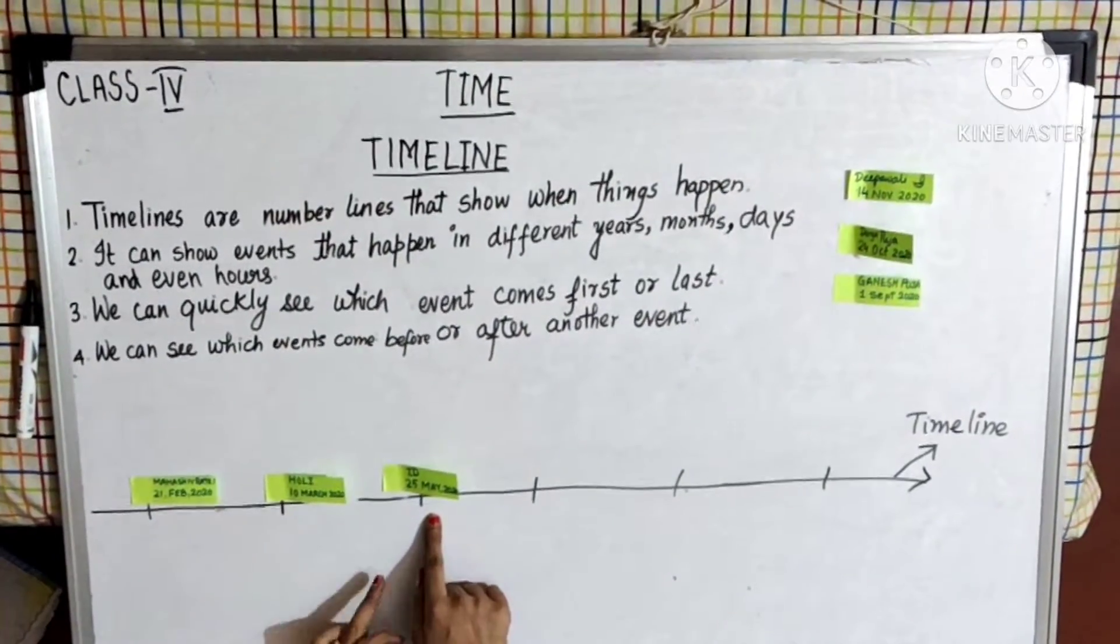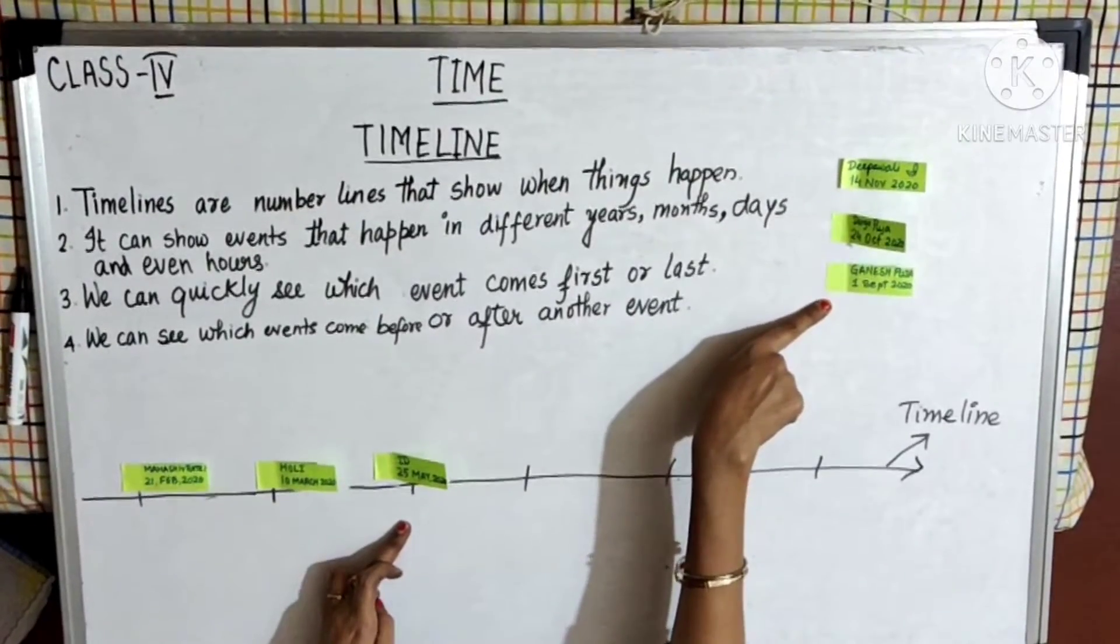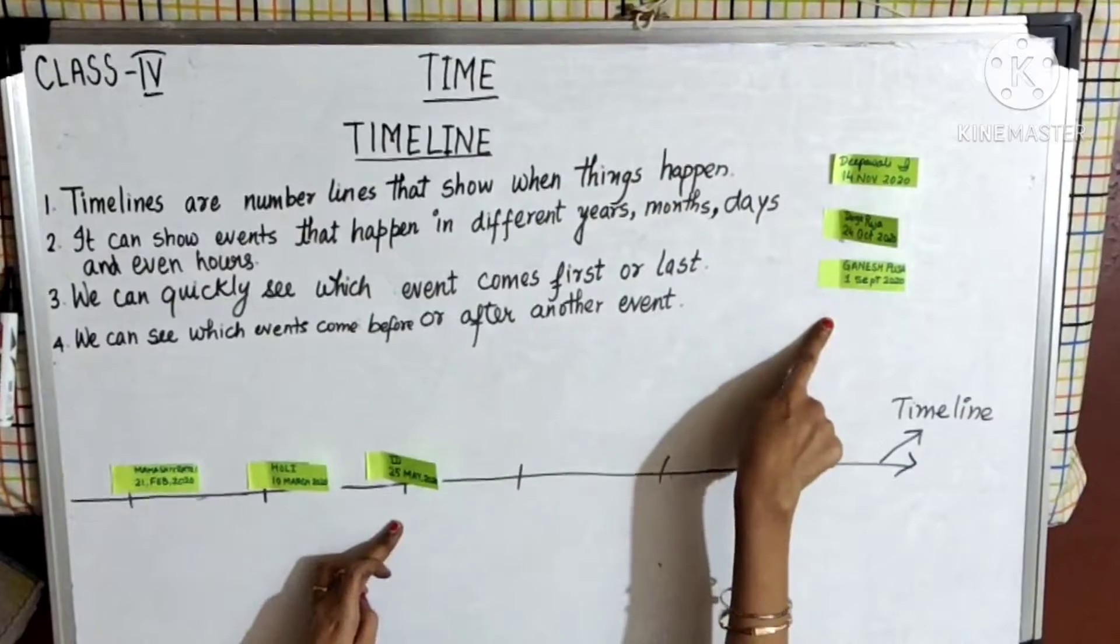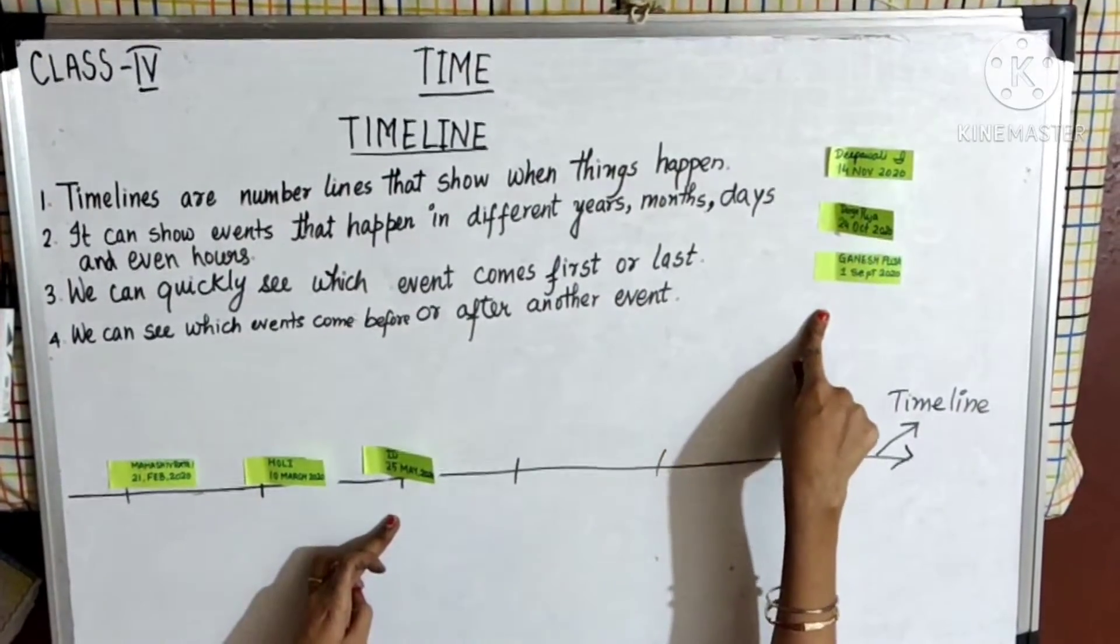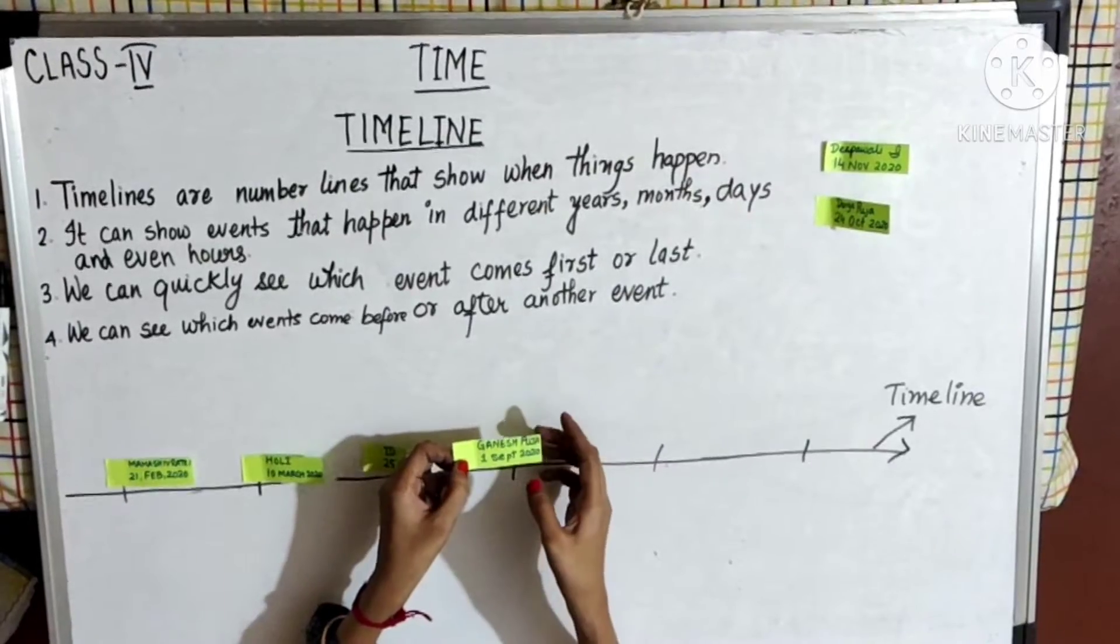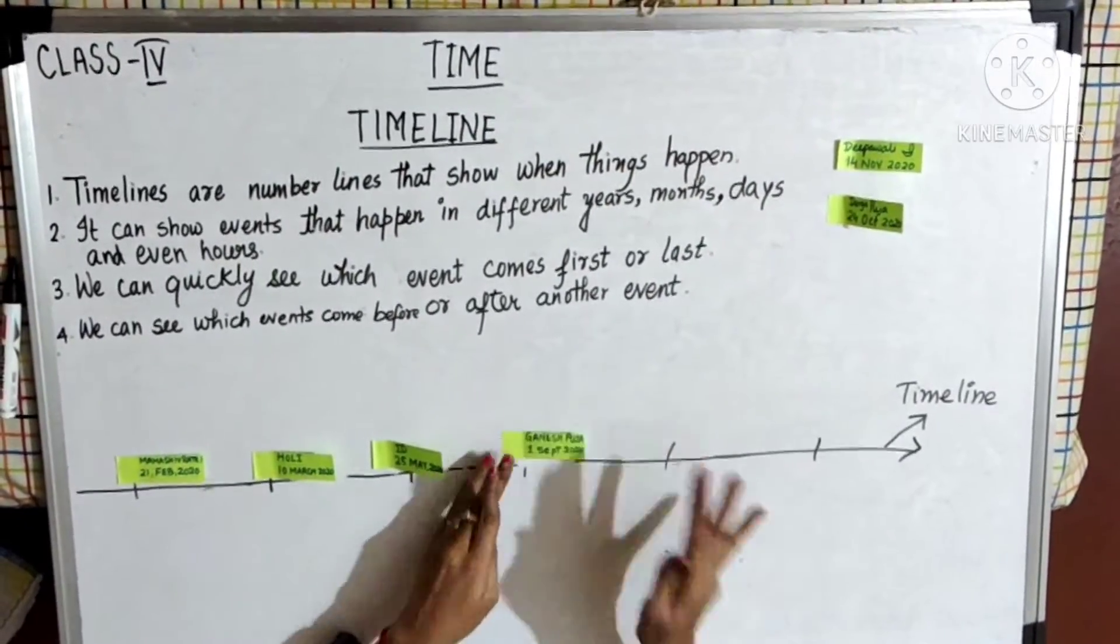After May comes June. There is no festival in June, not in July, and no event in August either. Next is September, that is Ganesh Puja. First September 2020 was Ganesh Puja. My next event is Ganesh Puja.